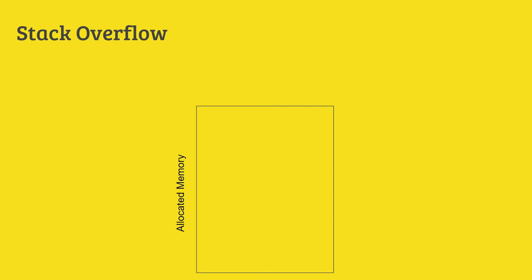When we run a JavaScript file and when we run a code, it definitely uses memory — it runs in our RAM. Suppose that our 1MB memory is allocated.